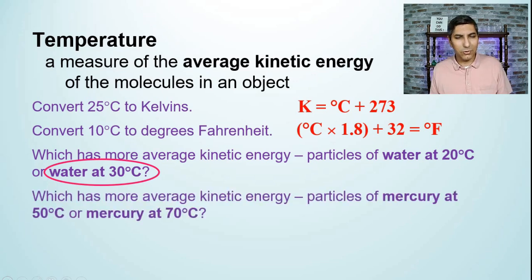How about this question? Which has more average kinetic energy? Particles of mercury at 50 degrees Celsius or mercury at 70 degrees Celsius? Well once again, average kinetic energy is the same thing as temperature. So which has the higher temperature? Of course that would be mercury at 70 degrees Celsius.